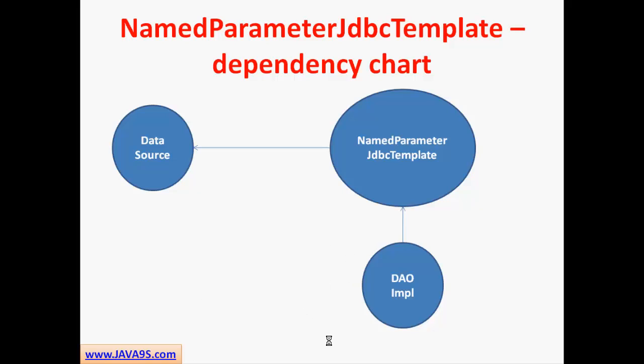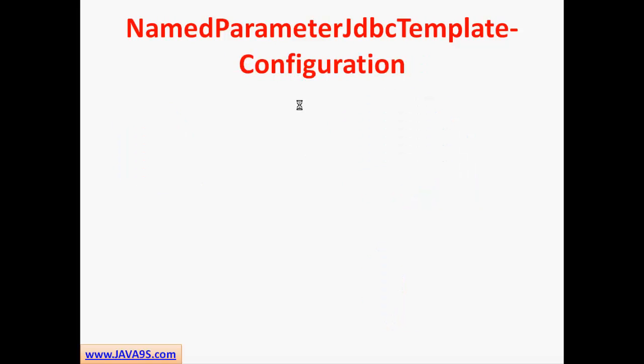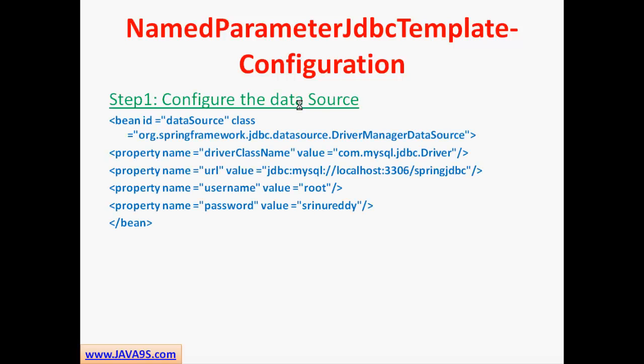Whatever we create as a DAO Impl will need the Named Parameter JDBC Template, and this JDBC Template will in turn need a data source to connect to the database, because the data source holds the information of where the database is actually located. The first configuration step is to configure our data source. You can see that I am using Driver Manager Data Source. If you are programming for production purposes, it is better to use C3P0 or Apache Commons DBCP API, which creates a pool of connections and improves application performance, since creating a connection is a very daunting task and heavy on network resources.